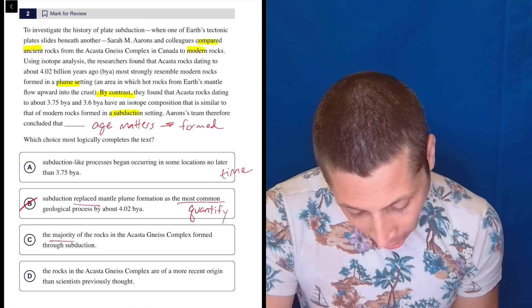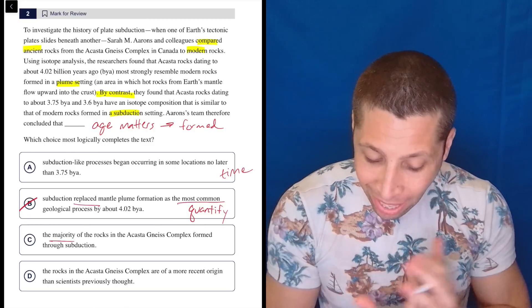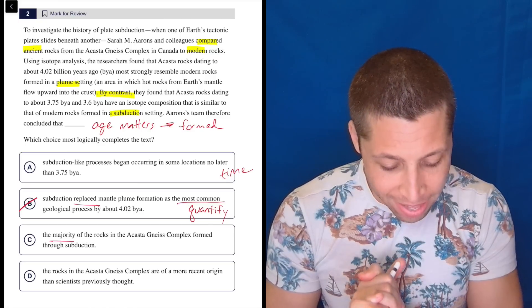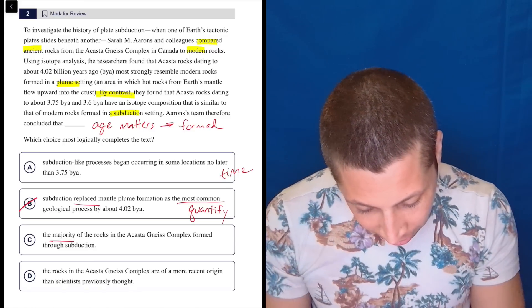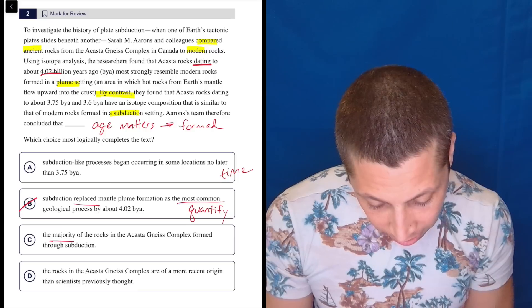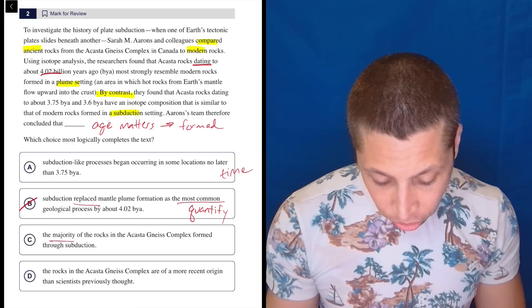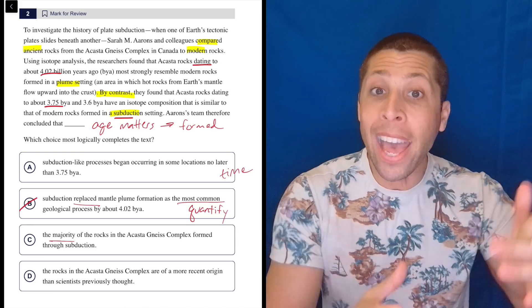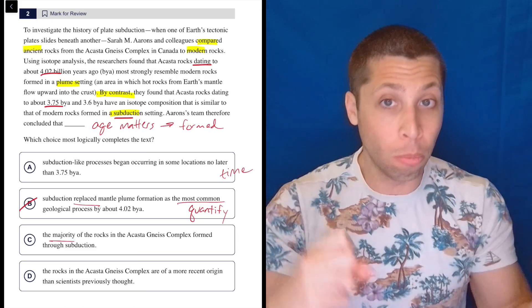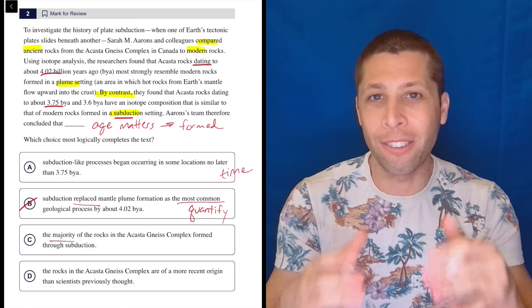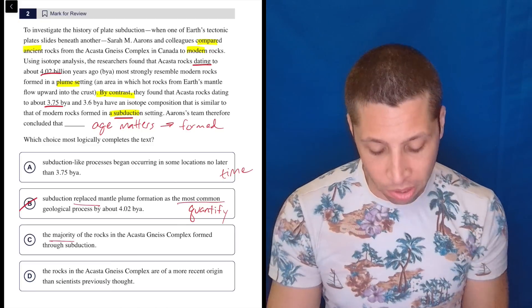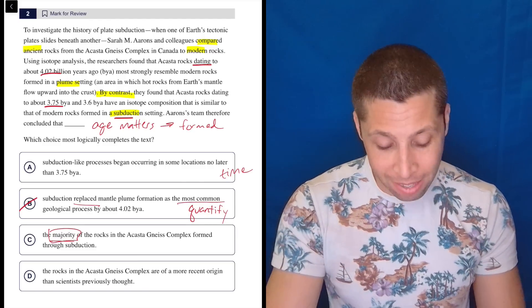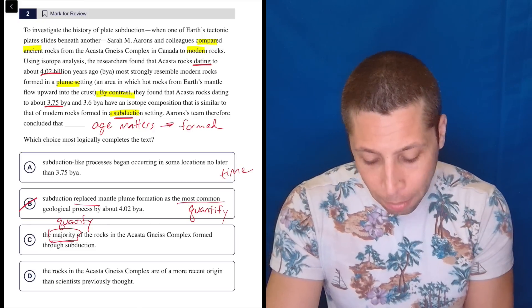So you've got to train yourself in some way to notice it as strongly as I do, because it's obvious that it's wrong here. Let's continue. The majority of the rocks in the Acosta-Nice complex formed through subduction. Again, I don't think so. This time I'm going to go back, because at least they're limiting us to this particular complex, but they talked about the time mattering, but I really don't think that they said, they didn't count all the rocks, right? So using isotope analysis, the researchers found that Acosta rocks dating to this time strongly resemble modern rocks in a plume setting. By contrast, they found that rocks dating to this other time are similar to the subduction setting, but there's no number. They're not saying, we found that most of the rocks in this area were the plume or were the subduction. They're just saying, here are two types of rocks we found, and here's where they formed. We're not getting the numbers that would allow us to justify a word like majority. Majority means 50% or more. So we really need numbers here. This is another really obvious quantifier trap that I would be very comfortable getting rid of.